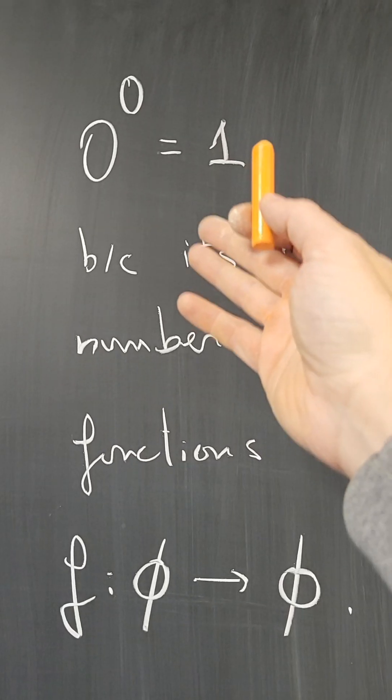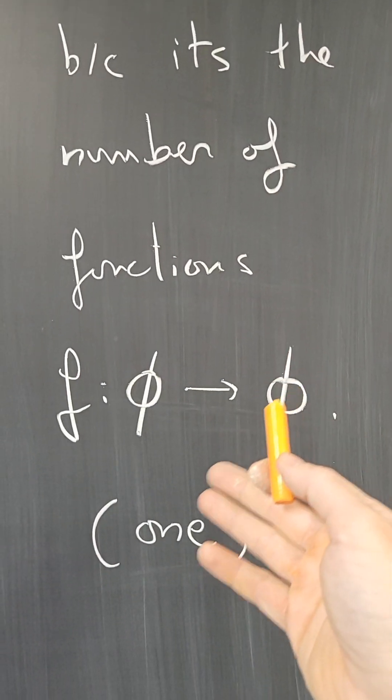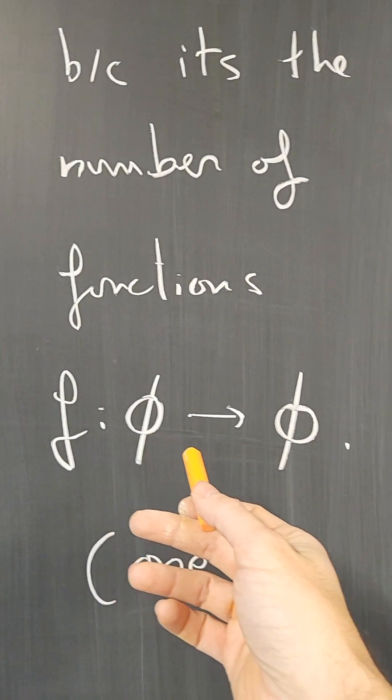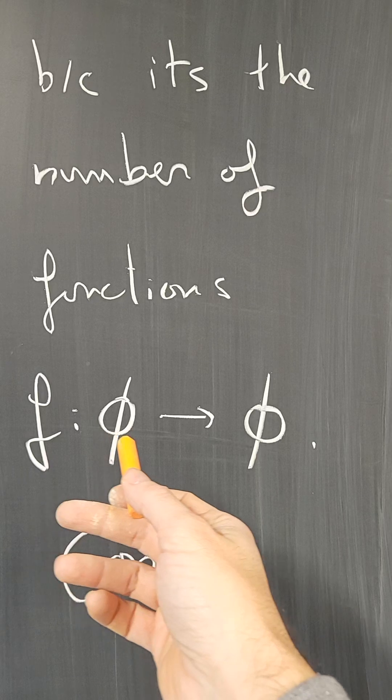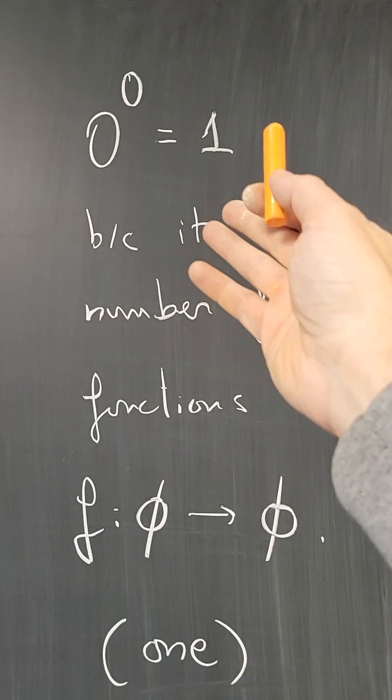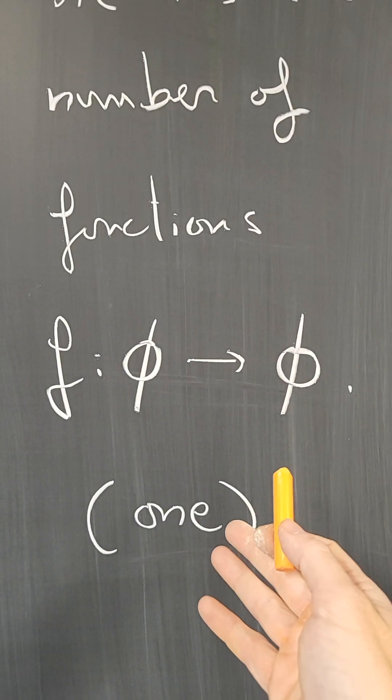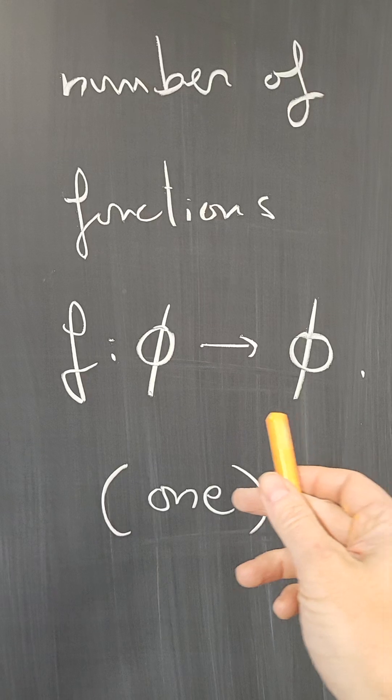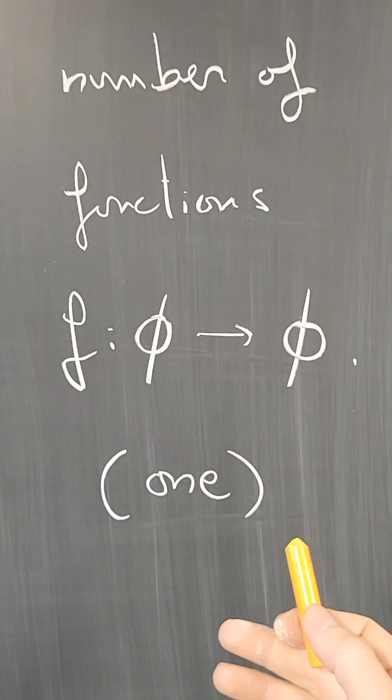So what is 0 to the 0? Well, that will be the number of functions from a set with 0 elements to a set with 0 elements, so empty to empty. And that is, in fact, 1. There is only one function from the empty set to the empty set.